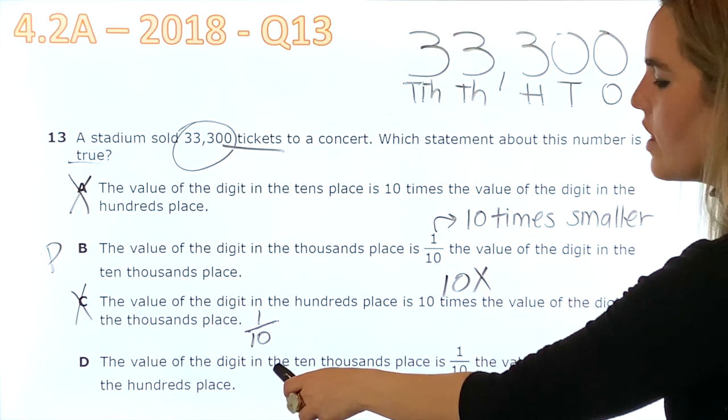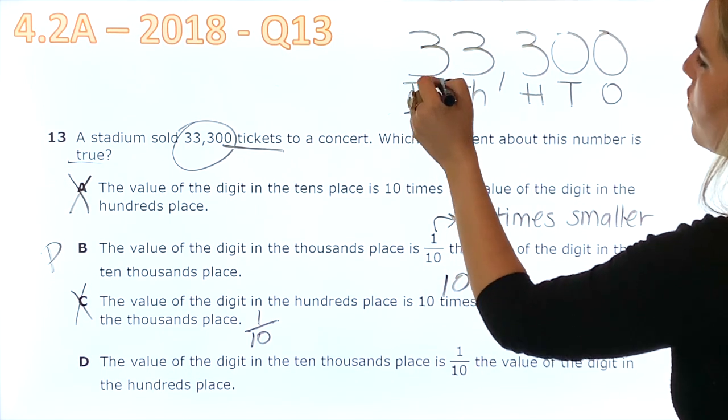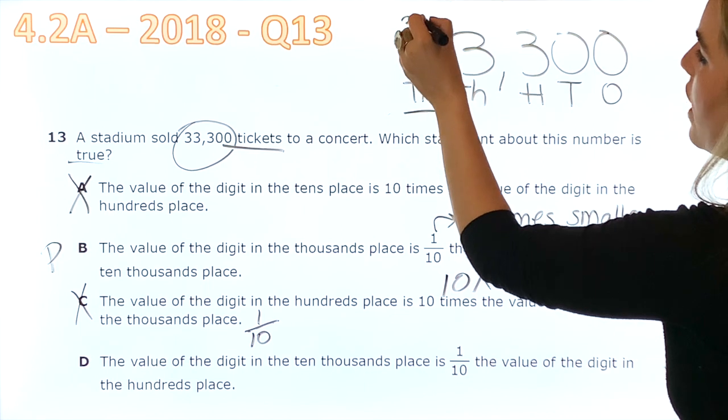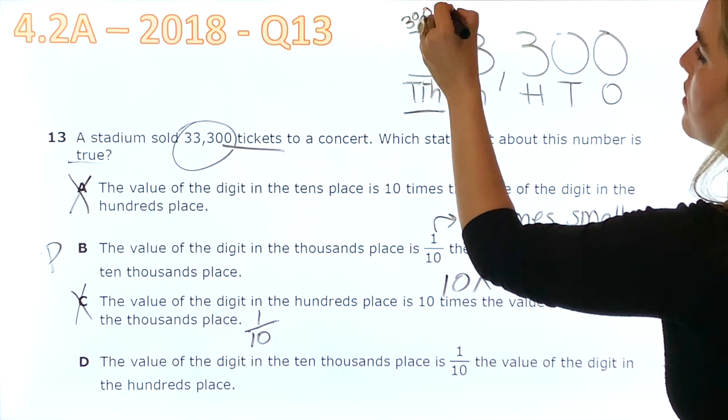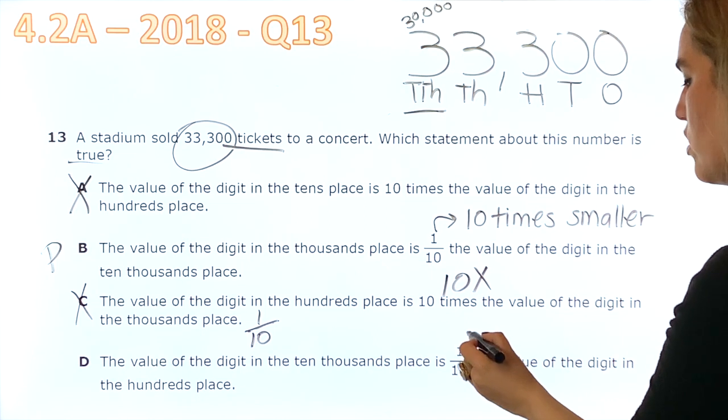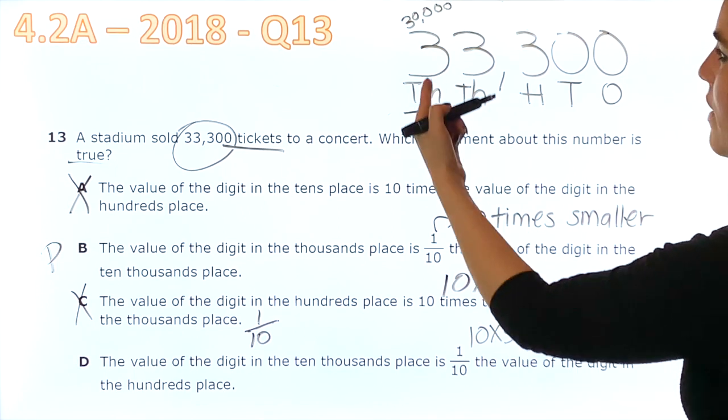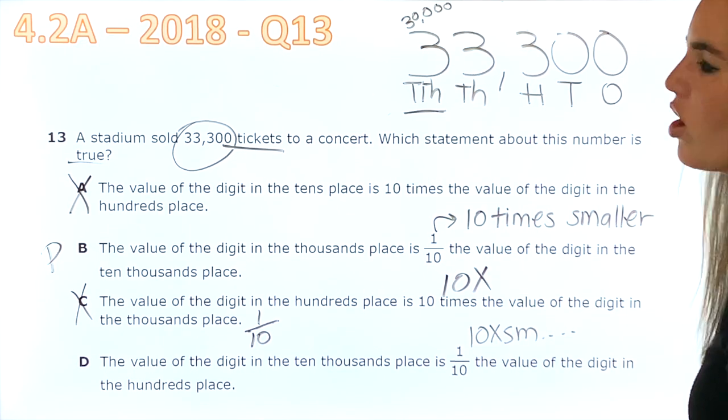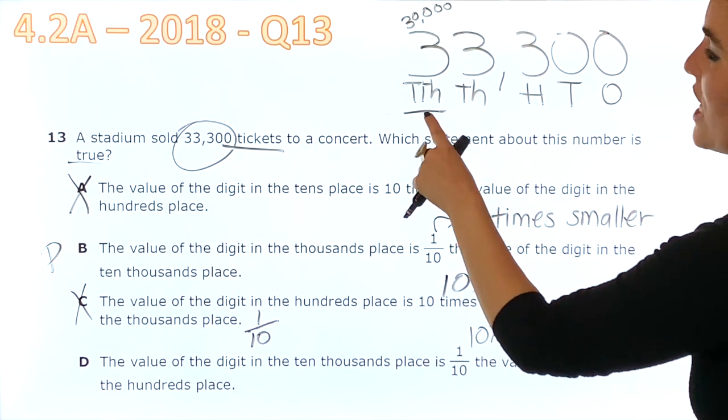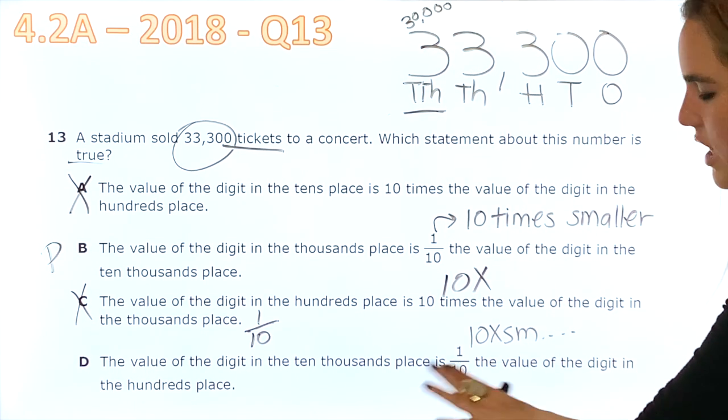The value of the digit in the ten-thousands place. Okay, this three. And this three is 30,000. It's one-tenth. So, ten times smaller. Just by now, I know that it's not smaller than anything because this three is the largest digit that we have. So, I'm already thinking that this is not right.